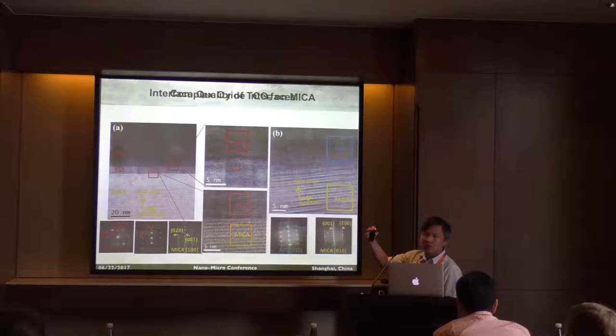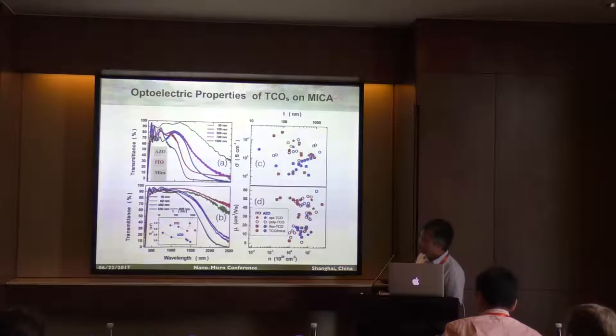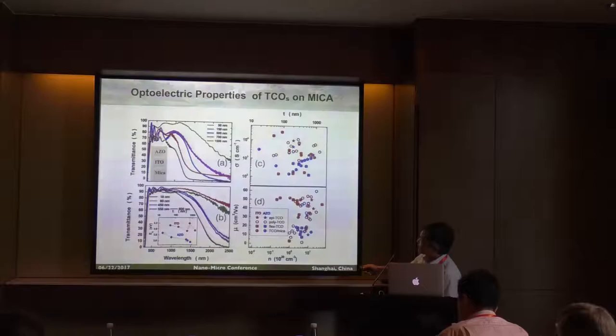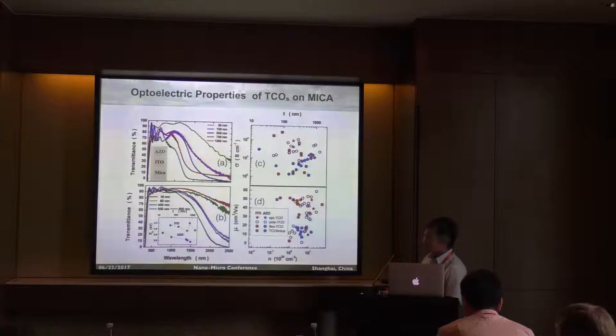We have a high-quality substrate with a high-quality electrode on top. This is unlike FTO on glass that you buy from a company — FTO is basically amorphous, and glass is also amorphous. Here, everything is almost single crystalline. We also checked the optical transmittance, conductivity, and mobility. These are samples with different thicknesses — one for AZO, one for ITO. Basically, we can get transmittance of about 80 to 90%, depending on ITO or AZO. When we compare with literature values, our samples are very close to the best values you can find in the literature.